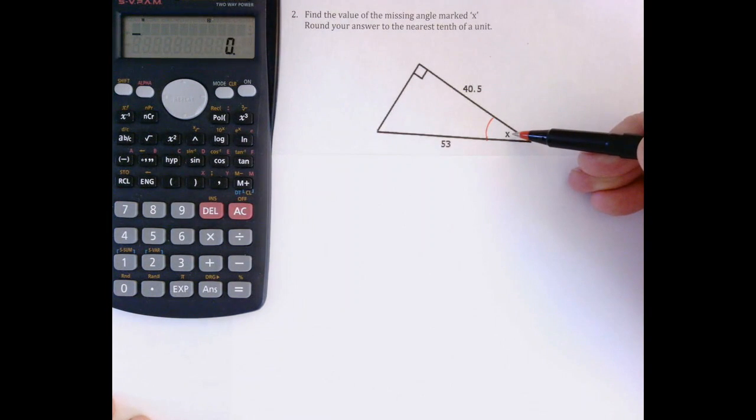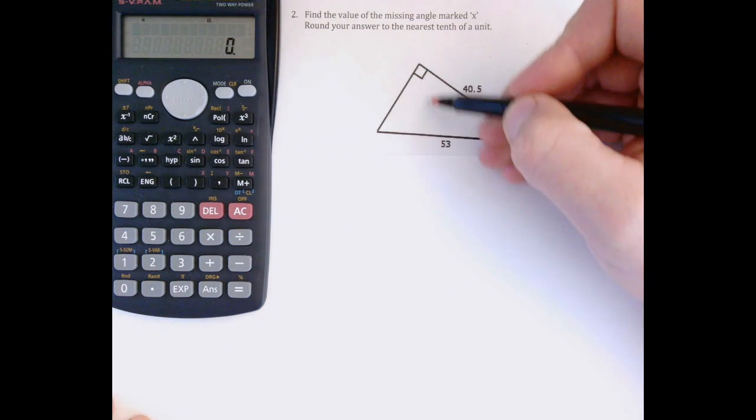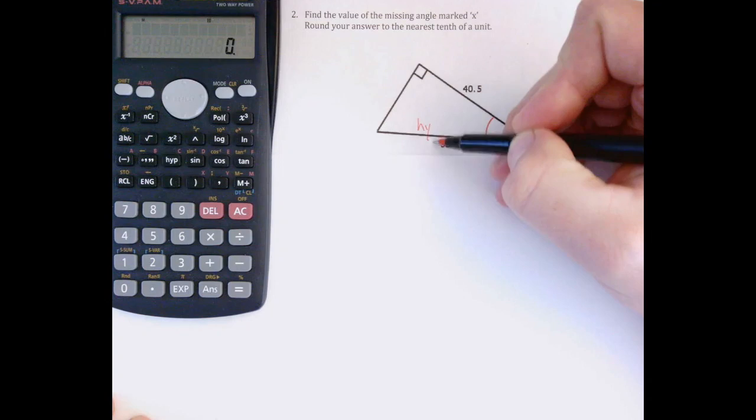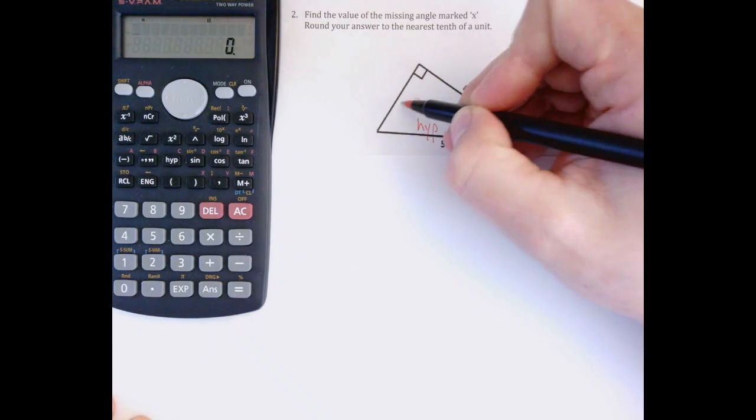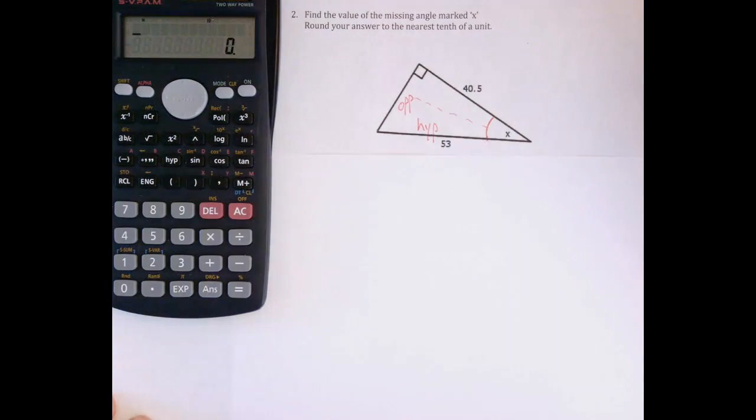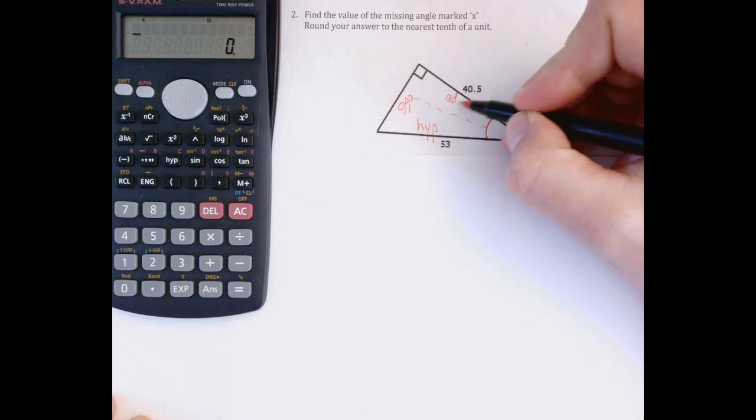So there's the angle I want to work with. After we choose the angle, we can label the triangle properly. Across from the 90 degree angle we always have the hypotenuse. Across from the angle we're working with we have the opposite side, and the third side is called adjacent.